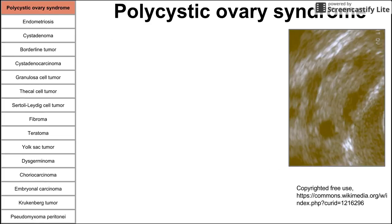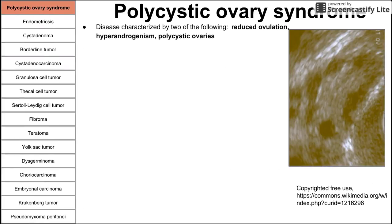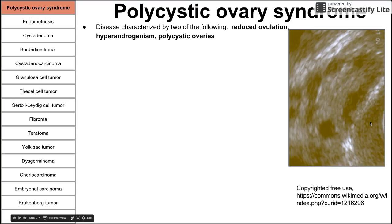Let's get started with polycystic ovary syndrome. This is a disease characterized by two of the following characteristics: reduced ovulation, hyperandrogenism — which is high testosterone and the downstream symptoms of that — and polycystic ovaries. Polycystic ovaries can be seen on ultrasound. We can see cystic spaces, and if you have more than one of these cysts, it's considered polycystic ovaries. You need to have at least two of these three findings to be diagnosed with this disease.